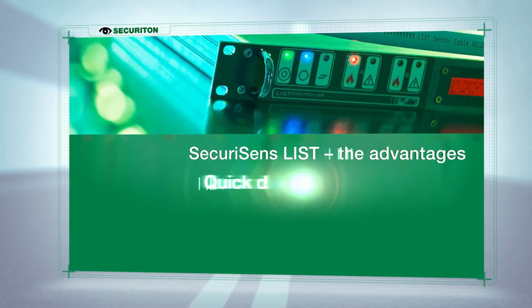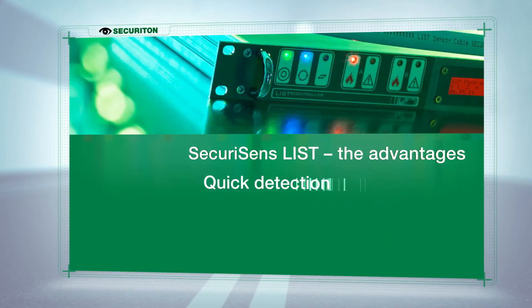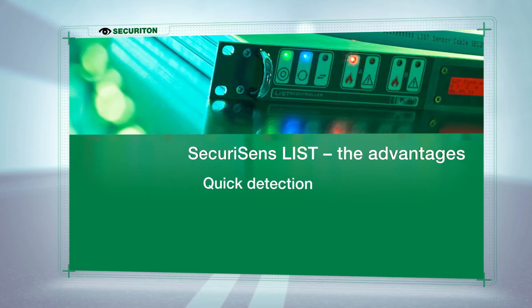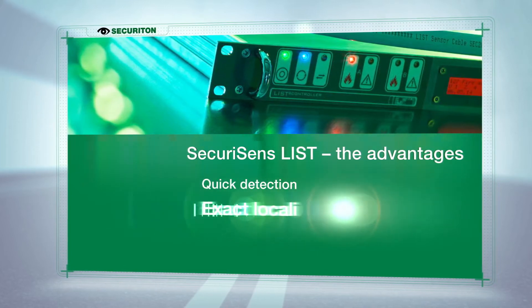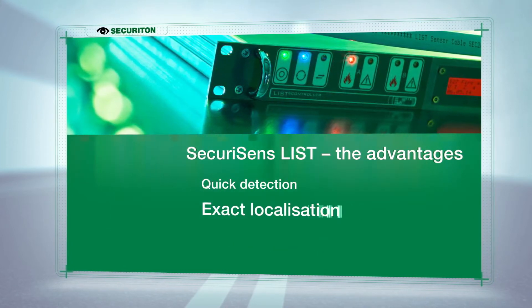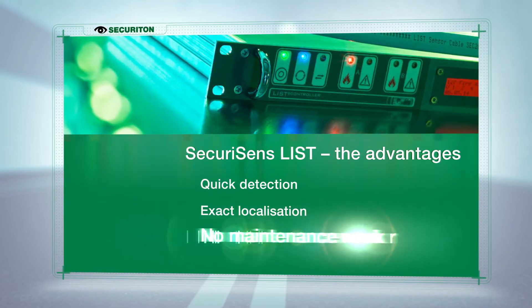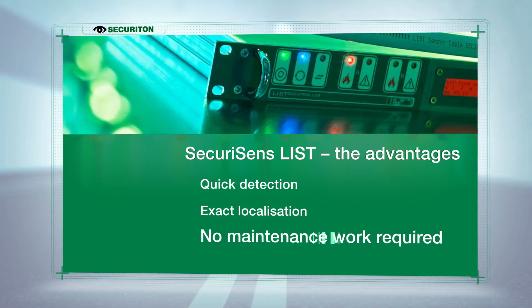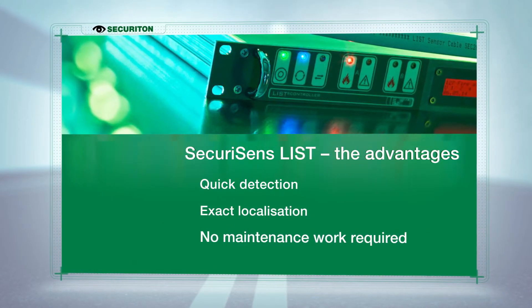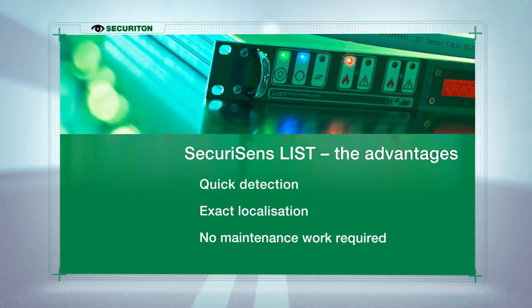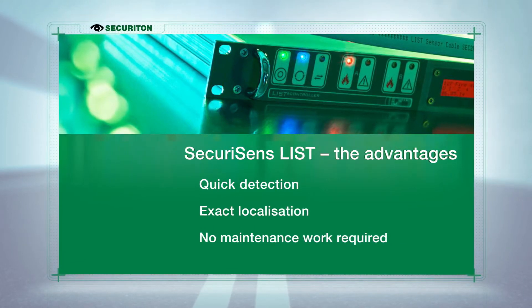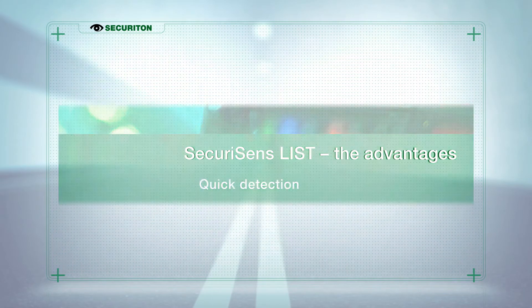The advantages are as follows. Fires are detected quickly. The location of the event is specified exactly, which is a big help to the emergency services and stationary extinguishing systems. Maintenance work is kept to an absolute minimum. The Securisense List sensor cable requires neither recalibration nor consumable materials.